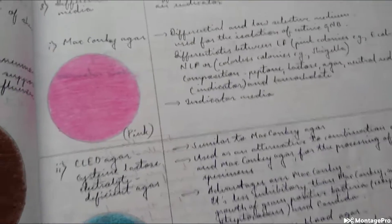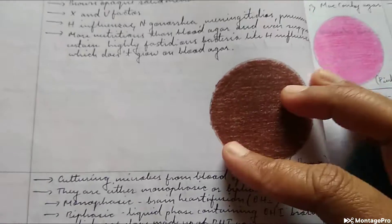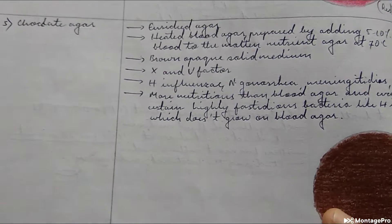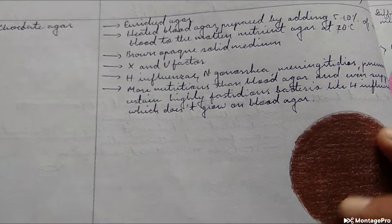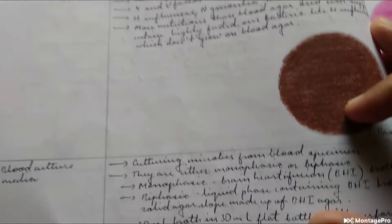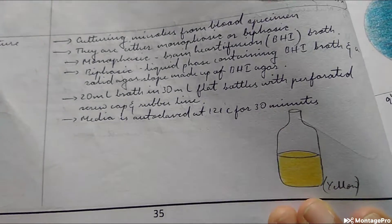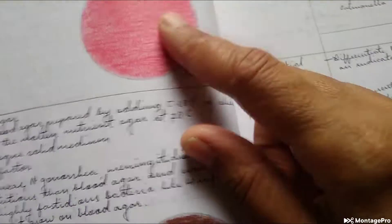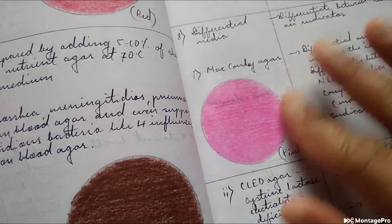Culture media - let's look at all the culture media. Look at these beautiful circles. This is chocolate agar, but it's not actually chocolate, it's blood that is heated. So it's heated blood agar and it will become like this because of hemolysis. What is this? Liquid culture, blood culture media.